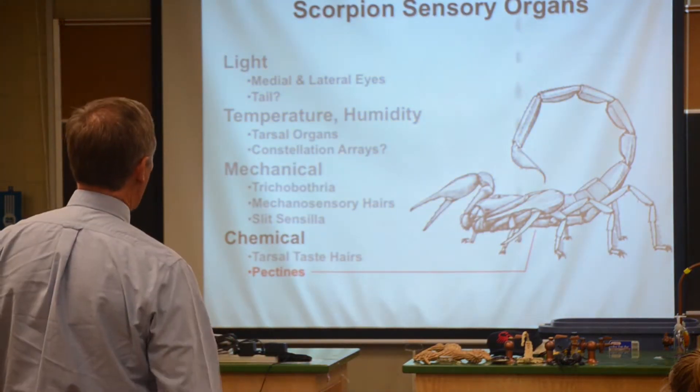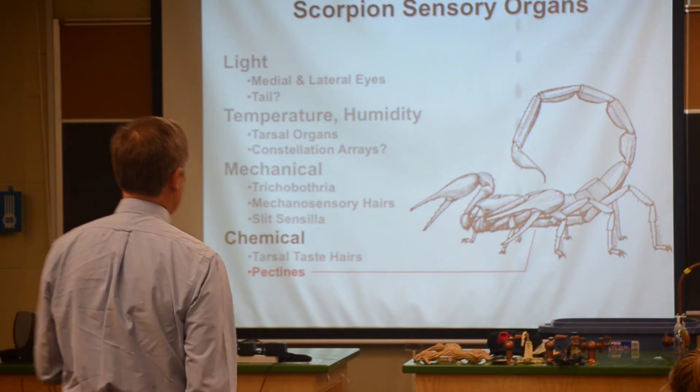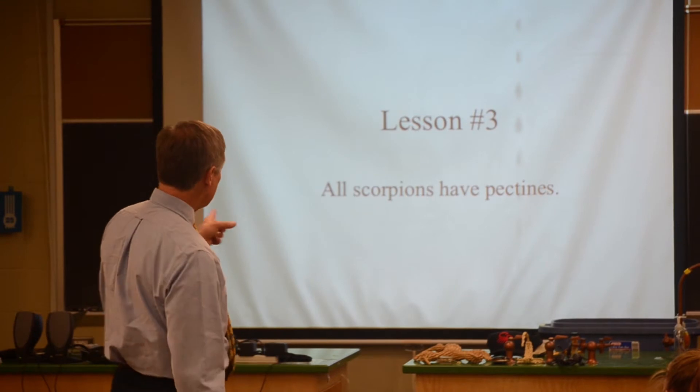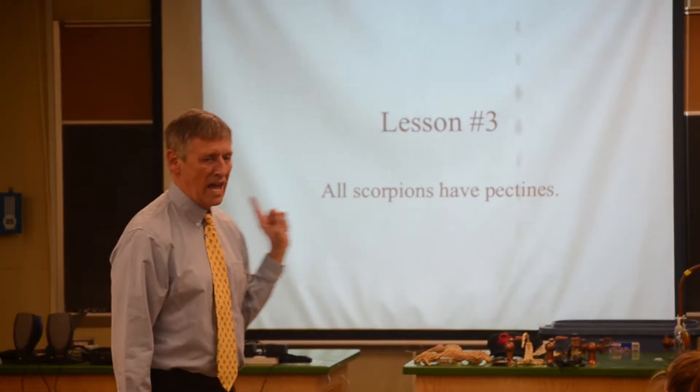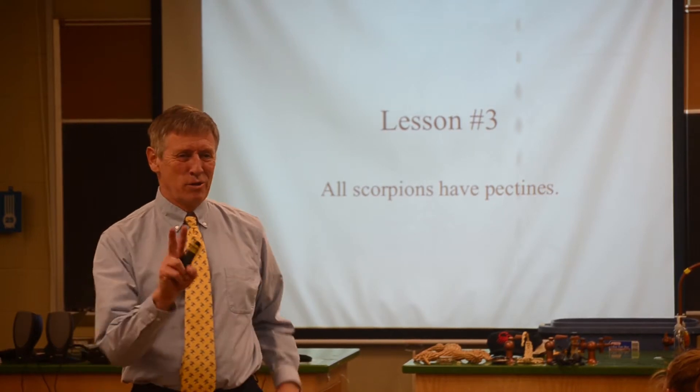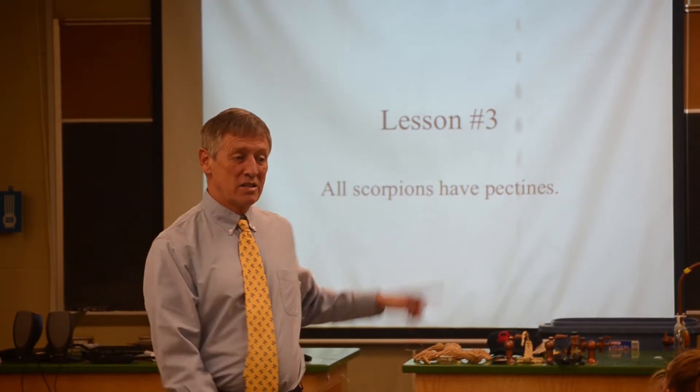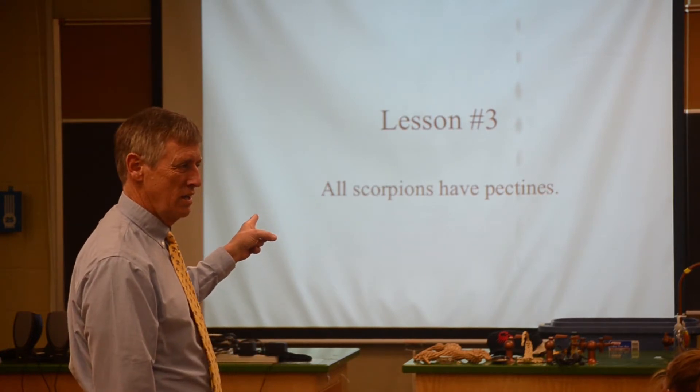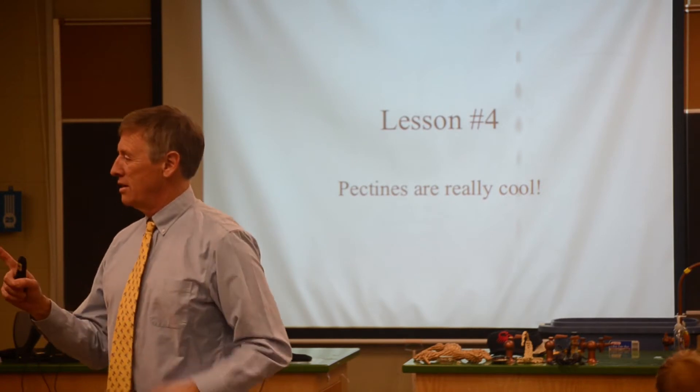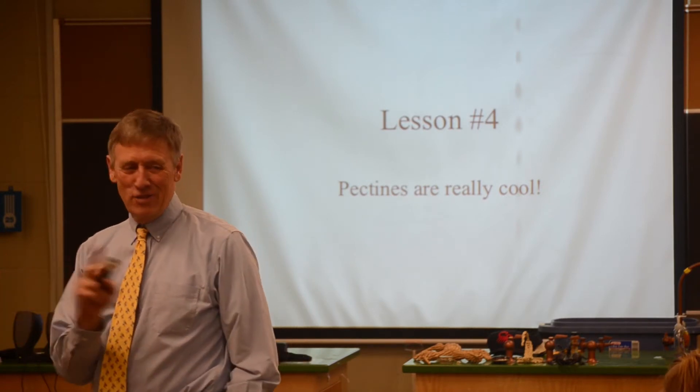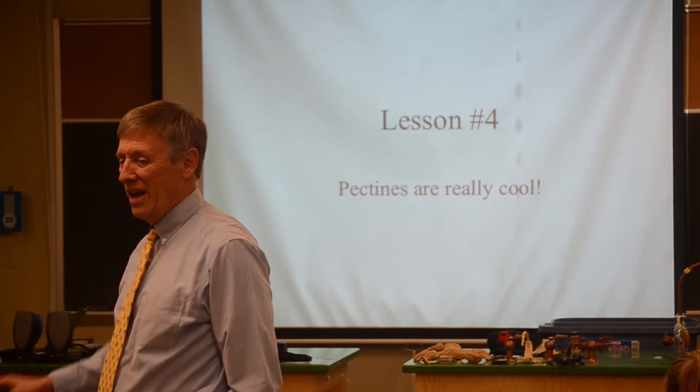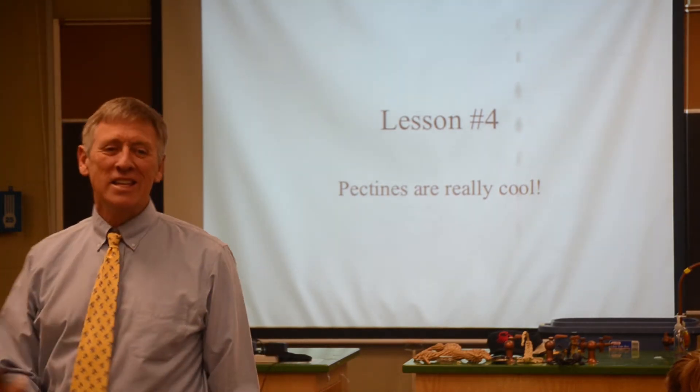Now the other thing you've got to know are these things on the bottom of the scorpion called pectins. And that's lesson number three. All scorpions have pectins. What's lesson number one? Scorpions don't bite, they sting. Right, lesson number two. Scorpions fluoresce under UV light. Lesson number three. All scorpions have pectins. Right, and lesson number four is that pectins are really cool. What was lesson number one? Scorpions don't bite, they sting. And two? Scorpions fluoresce under UV light. Three? All scorpions have pectins. And four? Pectins are really cool. Yes they are, they are really cool.